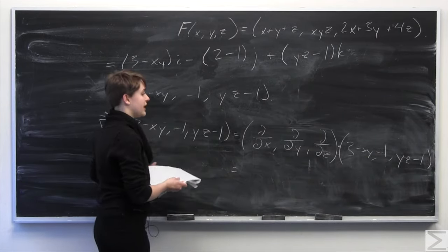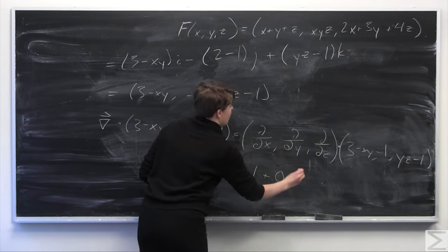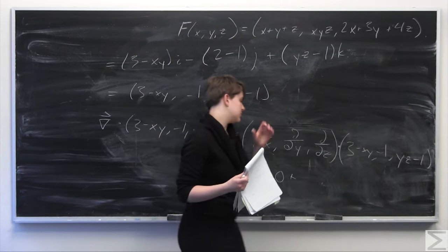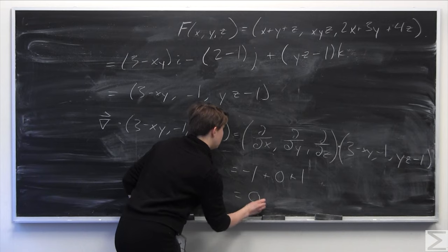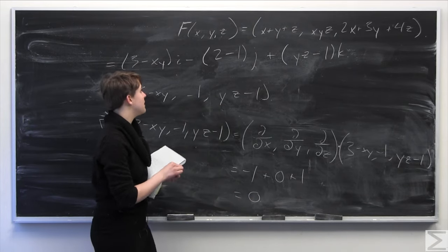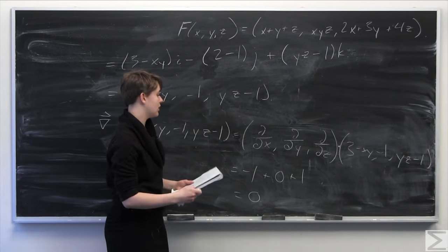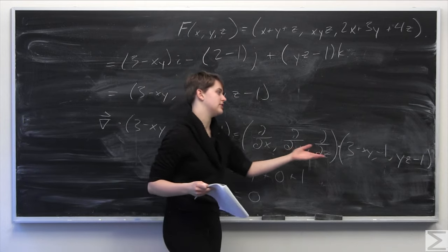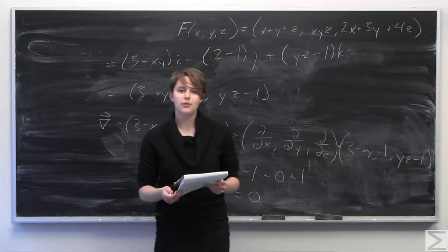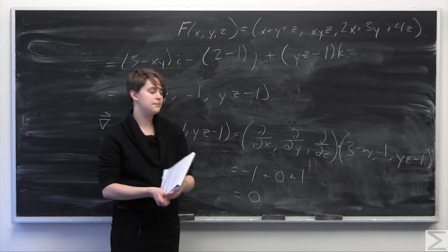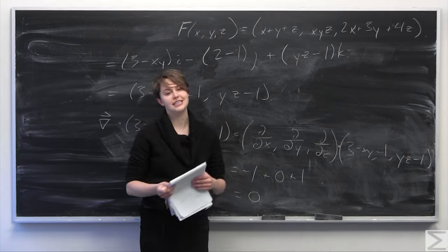The partial of (3 minus xy) with respect to x is negative 1. The partial of negative 1 with respect to y is 0. The partial of (yz minus 1) with respect to z is 1. So we're left with negative 1 plus 0 plus 1, which equals 0. The result is a scalar, as expected from the divergence of the curl. Therefore, the divergence of the curl is identically equal to 0.